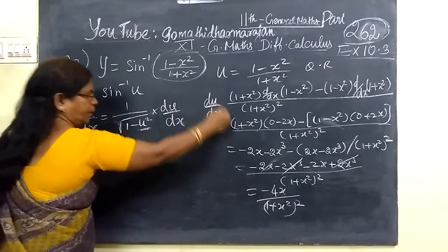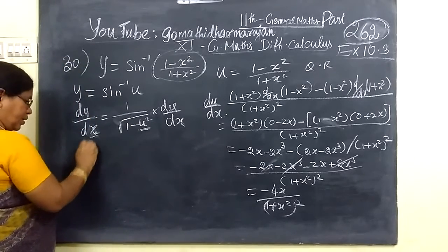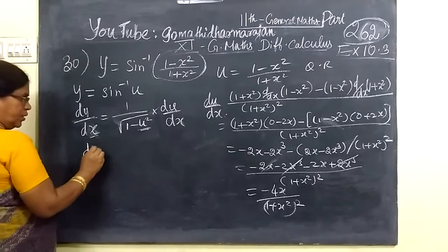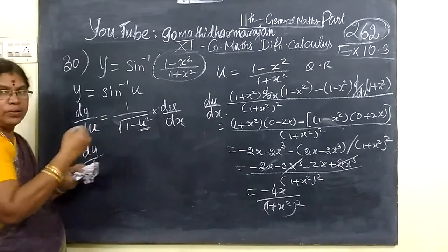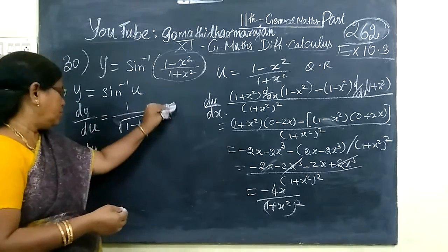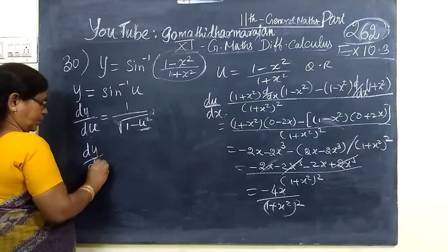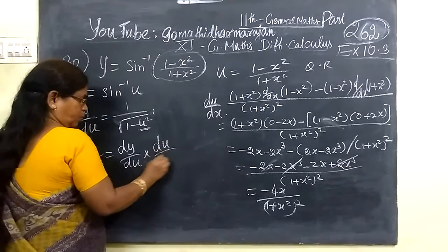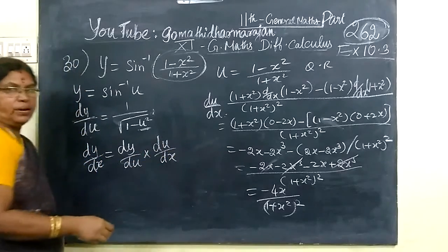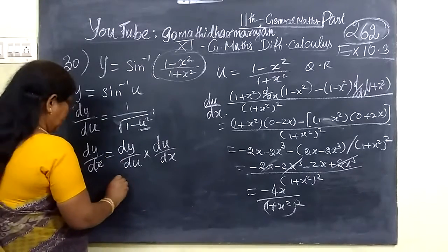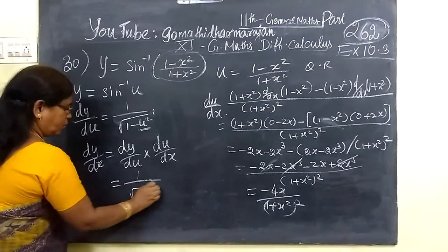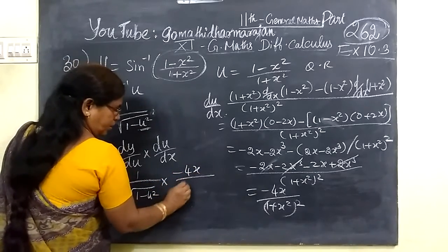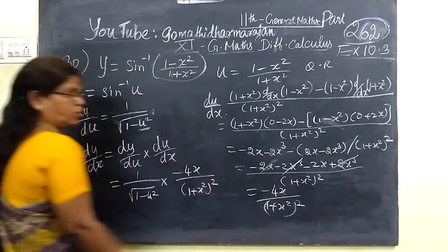So du by dx is the derivative part, and dy by du is 1 by root of 1 minus u squared, into du by dx which is minus 4x, then divided by 1 plus x squared, the whole square.